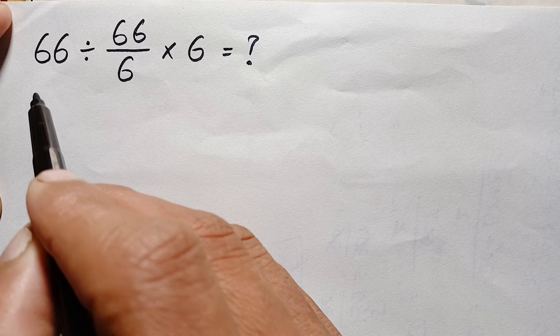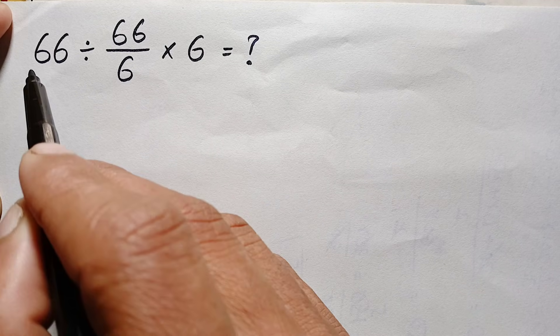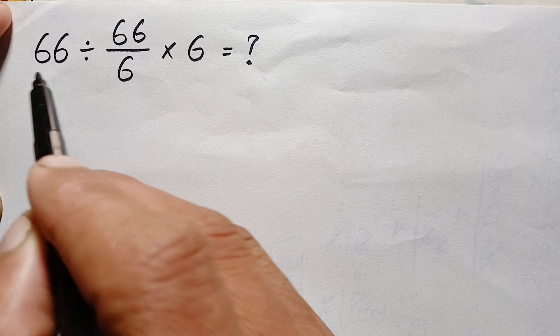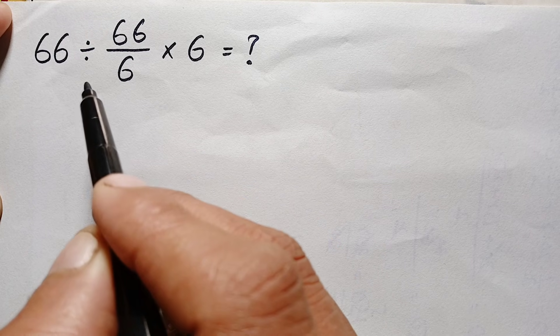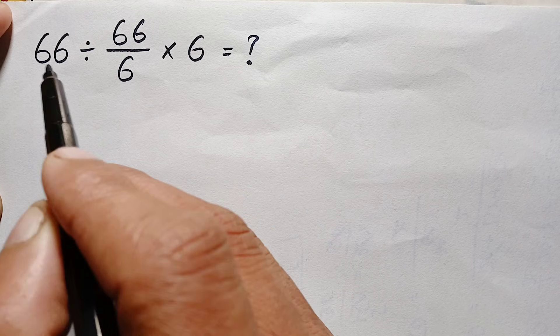There is division first from the left side, so therefore here we will do this division. We will divide this number by this fraction. Now divide this 66 by this fraction, here we will apply the KCF rule.